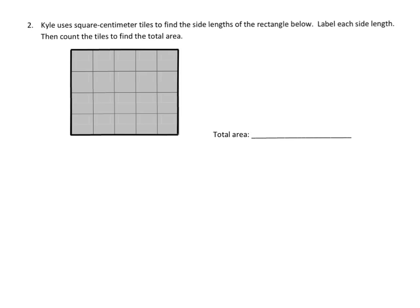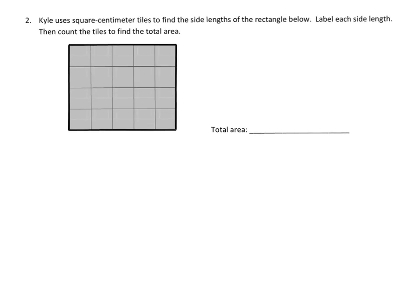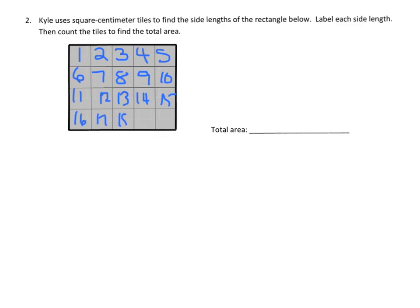In this problem, Kyle uses square centimeter tiles to find the side lengths of the rectangle below, then labels each side length and counts the tiles to find the total area. First, we count the tiles: one, two, three, four, five, six, seven, eight, nine, ten, eleven, twelve, thirteen, fourteen, fifteen, sixteen, seventeen, eighteen, nineteen, twenty. So we know the area is twenty square centimeters.